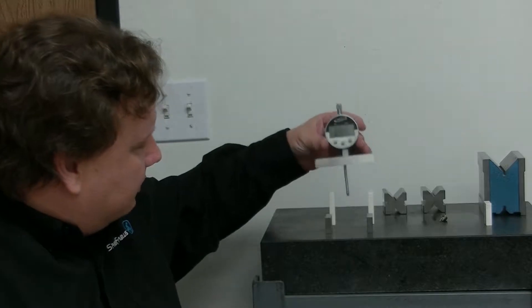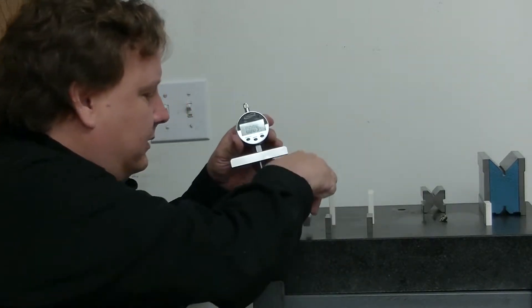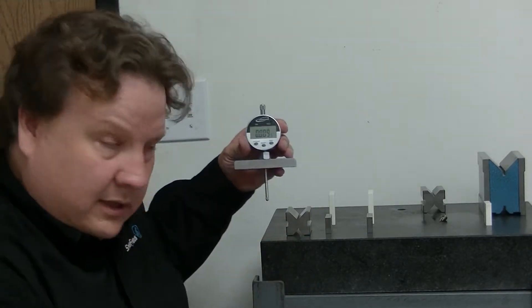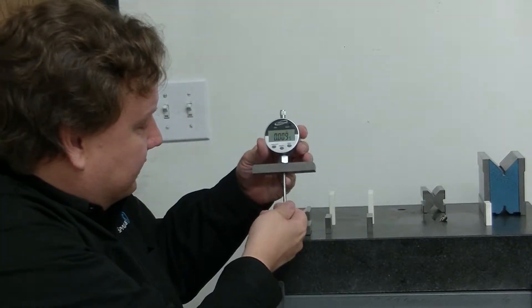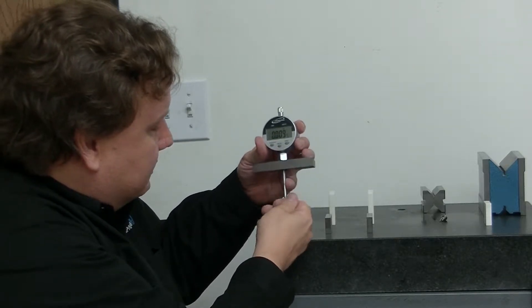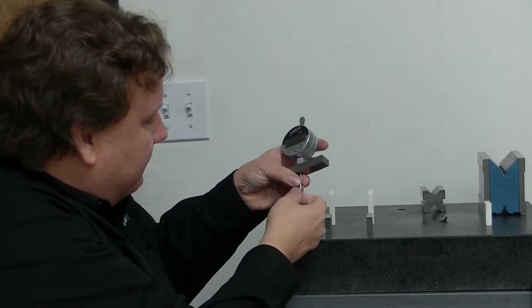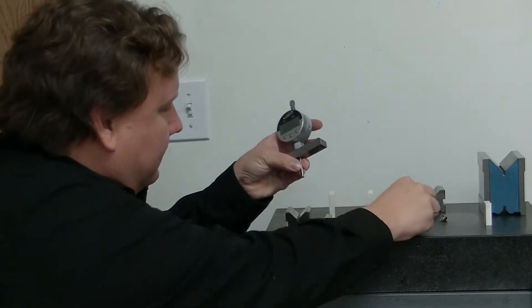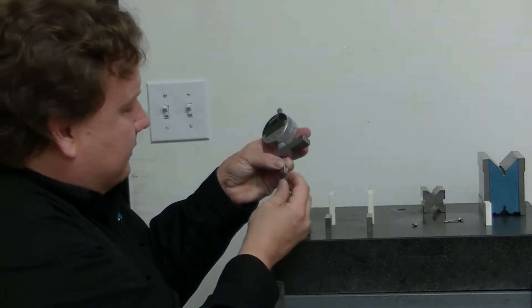If you want to measure something like this block here with the edges inside, say you want to measure that edge, that would be a more difficult thing to measure. But what I can do is remove the nose piece, grab this here, and this kit comes with a flat piece. Like that, so I can thread that on.